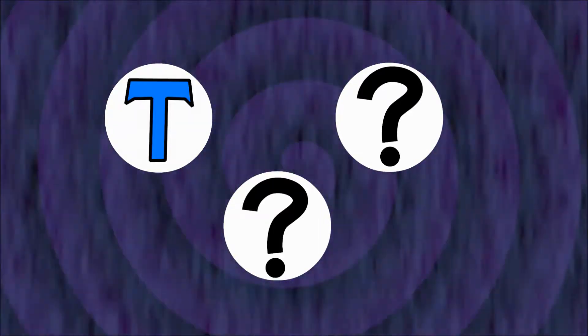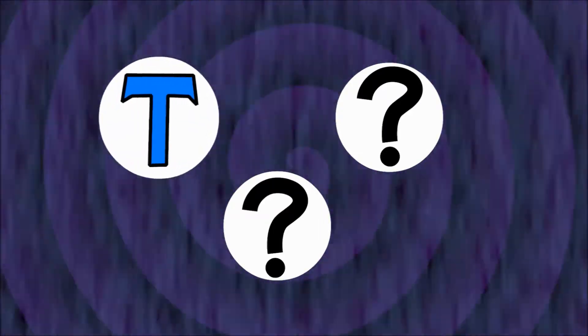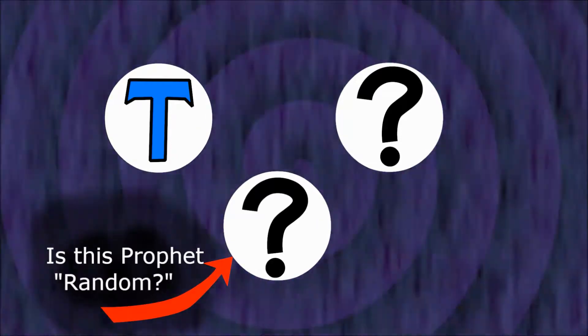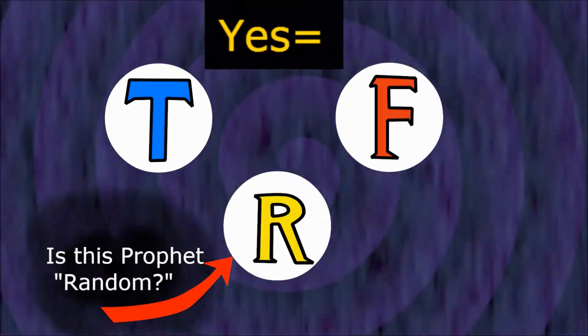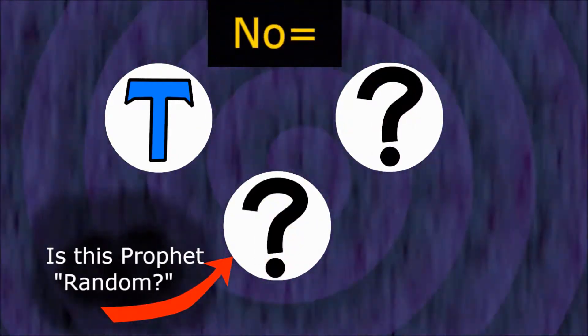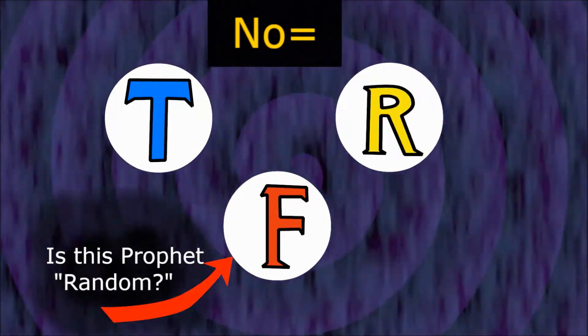If we know that we're talking to Truth for the last question, we can solve the riddle. For instance, we could point to a prophet and ask Truth, 'Is this guy Random?' If he says yes, then that's Random and the other one is False. If he says no, then the guy you pointed to is obviously False and the other one is Random.